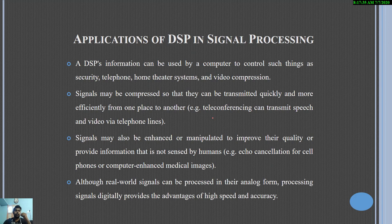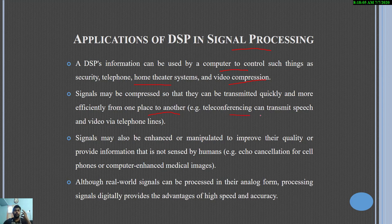In some applications of DSP in signal processing, they can be used by a computer to control security systems, telephonic systems, home theater systems, and other video compression techniques. The signals may be compressed so that they can be transmitted quickly and more efficiently from one place to another. An example of this is teleconferencing, which transmits speech and video via telephone lines.